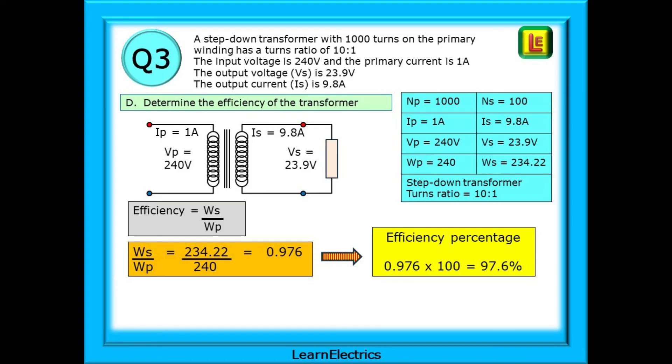If we want this as a percentage, multiply it by 100. 0.976 multiplied by 100 equals 97.6% efficiency. And that's our answer.